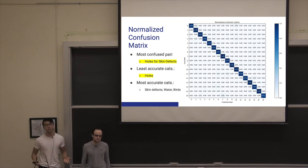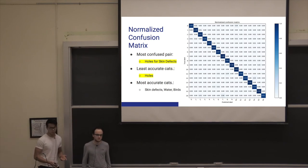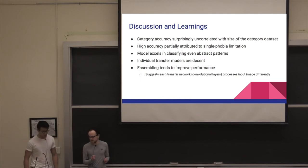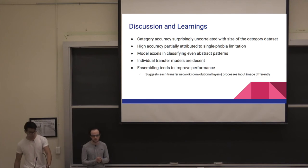The least accurate category was also holes, and we suspect this was due to the fact that holes had the lowest training samples, having a total set of around 177 pictures. The most accurate categories were skin defects, water, and birds. To our surprise, the category accuracy does not seem particularly well correlated with the size of the dataset. Our model gets very high accuracy in classifying even the more abstract phobias. Individual transfer models perform decently, but ensembling leads to clear, noticeable, and significant improvements.